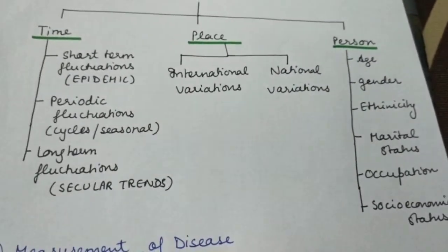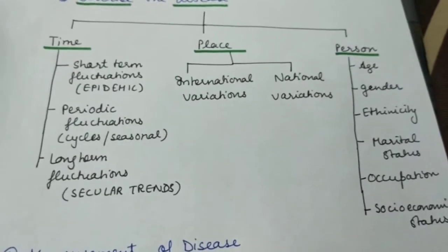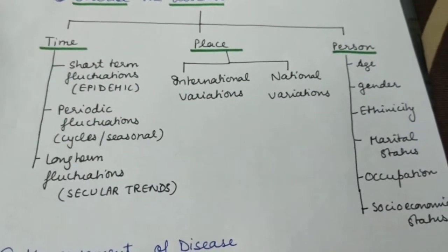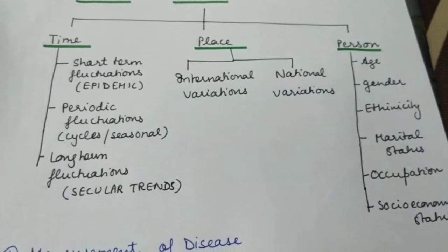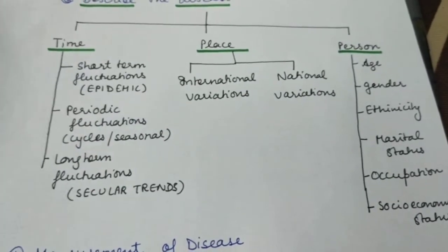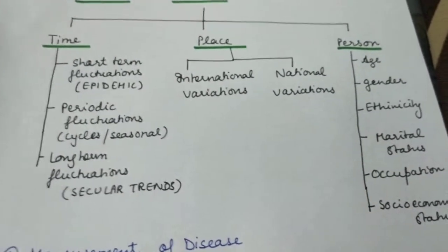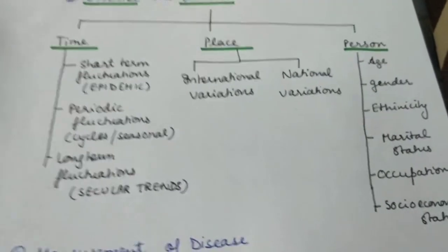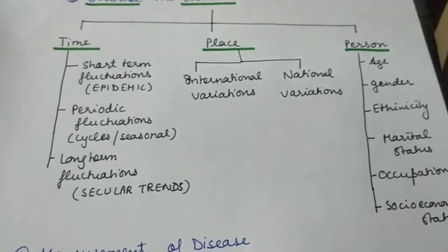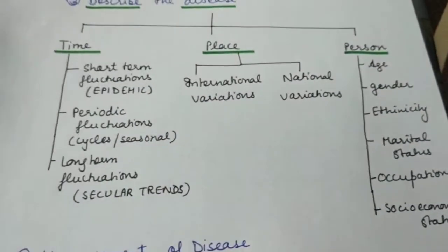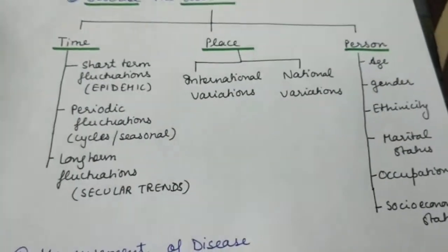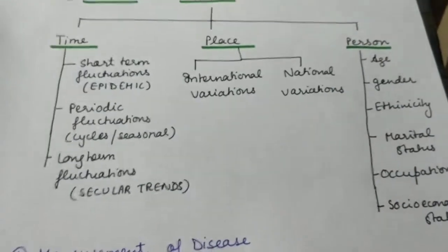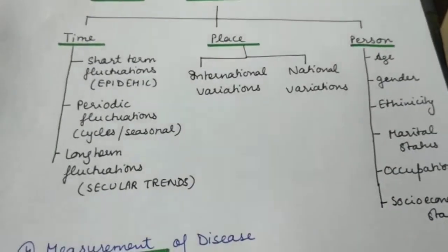There are three types of epidemics. First are slow epidemics, like diabetes and obesity — they gradually increase and may show rise or fall. Then you have the common source epidemic. Finally, there are propagated epidemics, which move from one person to another — like coronavirus, which has now formed into a pandemic but travels from one person to another.